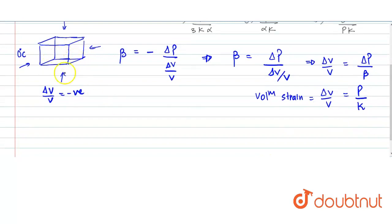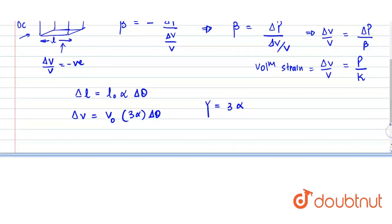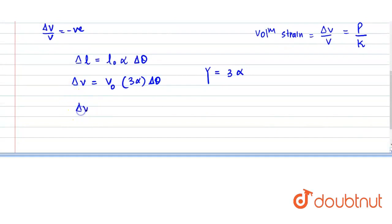Now, if we are increasing the temperature, so as we know, the change in side is given by L0 alpha delta theta. Delta L is the change in length of one side. If this is L equals to L0 into alpha delta theta. Similarly, the volume change can be written as delta V equals to V0, that is 3 alpha into delta theta. The coefficient of volume expansion is given by 3 times of the coefficient of linear expansion.